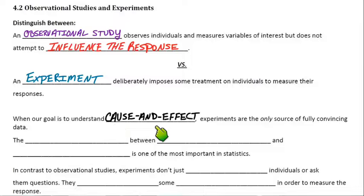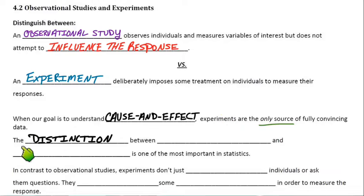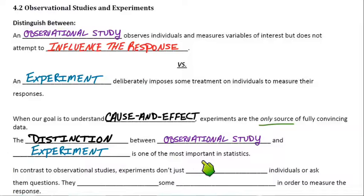If we want to understand cause and effect — if we want to establish a cause-and-effect relationship for whatever variable — experiments are the only source of fully convincing data. The only way to establish cause and effect is by conducting an experiment. The distinction between an observational study and an experiment is one of the most important you'll find in statistics, in this class, and for the AP exam.